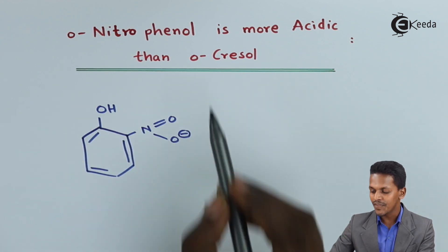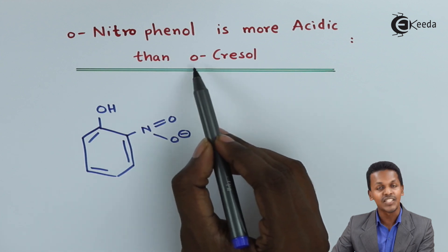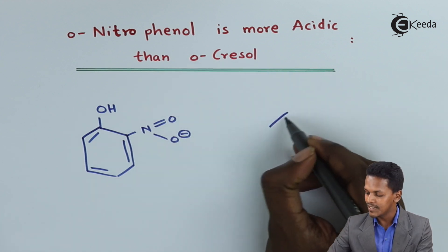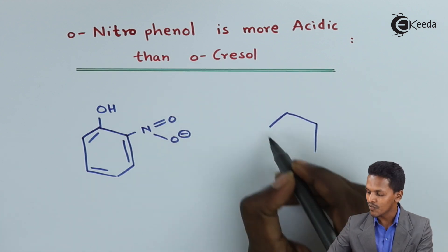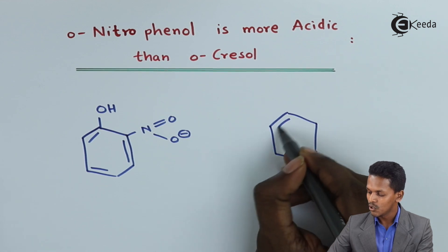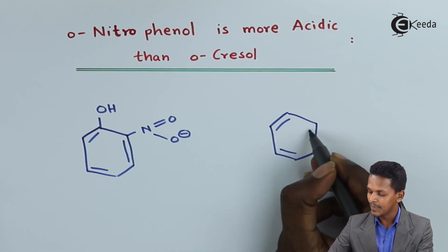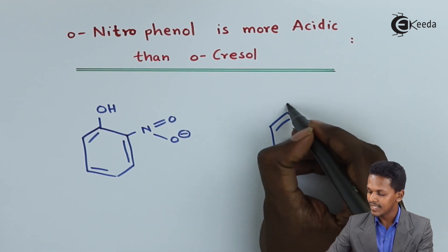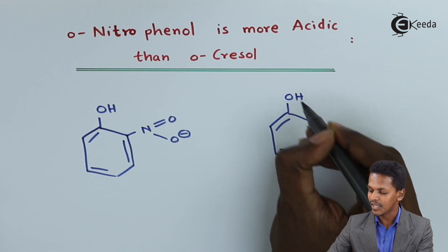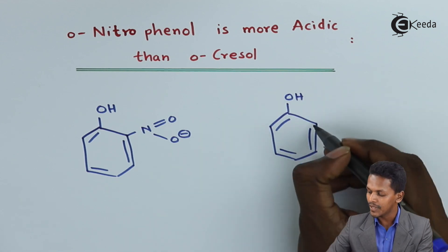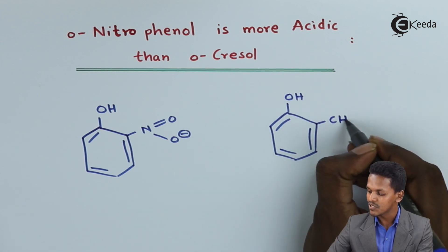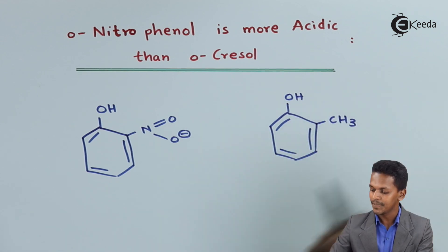If we have to talk about the structure of ortho-cresol, it consists of a benzene ring to which the hydroxyl group (OH) is attached to the carbon atom, and at the ortho position there is a presence of CH₃.